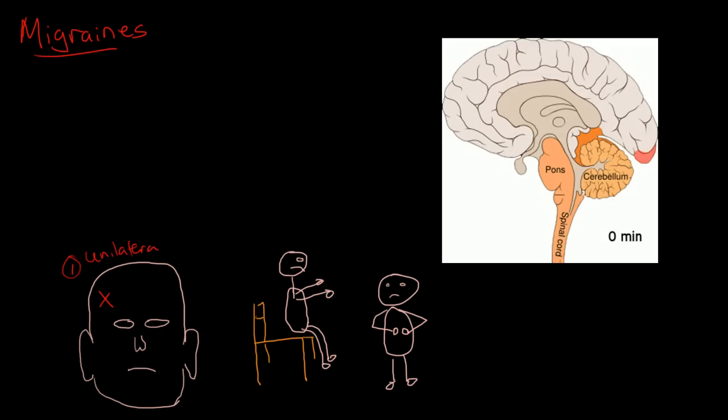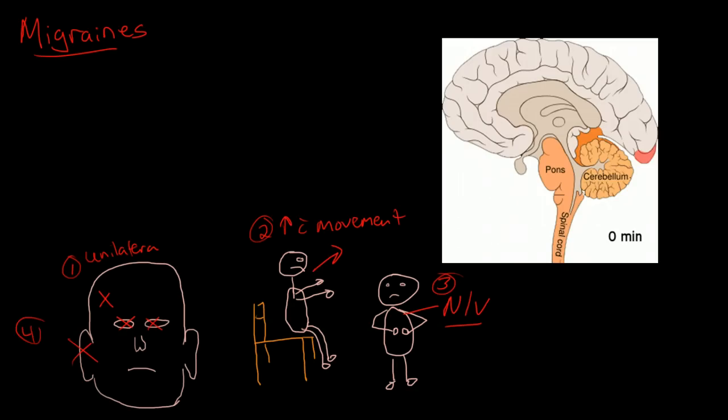Pain that is worse with movement, increased with movement, can be associated with nausea and vomiting, and you may have photophobia or phonophobia. So this would be number three and number four: photophobia or phonophobia. And then number five would be a pulsating sensation.